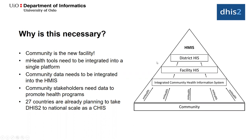Why are integrated community health information systems necessary? When we talk about national information systems, we consider the community health information system a layer of the national HMIS. We have district information systems, facility information systems, and below that, community health information systems feeding data up while also integrating across all the various mHealth tools being used. Right now we have about 27 countries using DHIS2 as their community health information system, and this is the model we are trying to encourage and assist them in implementing.